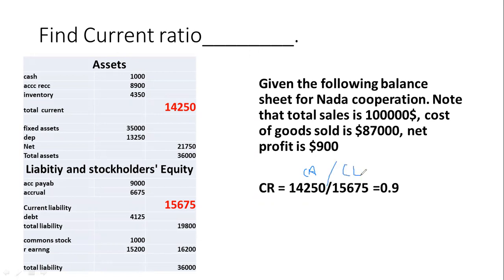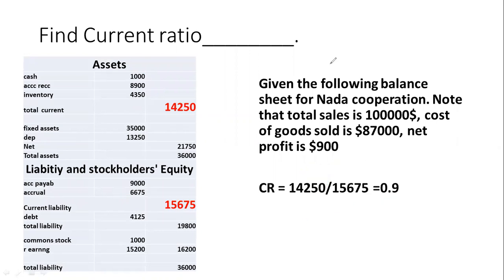The current assets include three items: cash, accounts receivable, and inventory — giving us the total current assets. We compare this with current liabilities, which include accounts payable and accruals. The result shows that current assets can cover only 90% of current liabilities. It would be better if the current ratio reached 1, but here it is less than 1.